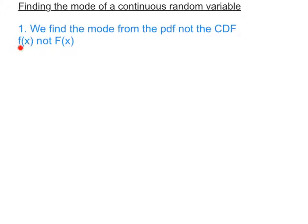We need to sketch the PDF, f(x), in order to find the mode. The way that we find the mode is by looking at the highest point on the graph. There are two ways of finding the highest point on the graph.